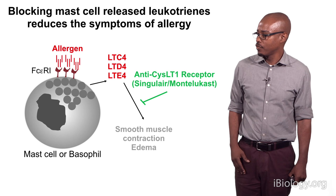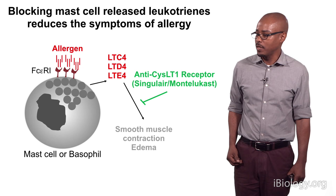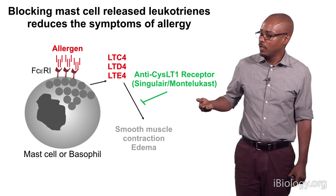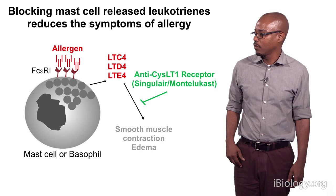There are other types of drugs, such as those based on the Singulair series, that do similar things to antihistamines. These drugs block the effects of leukotrienes produced by mast cells, which have the same effects: smooth muscle contraction and edema. They do this by competing with the leukotrienes for the receptors on smooth muscle cells, thereby preventing their action on these cells.